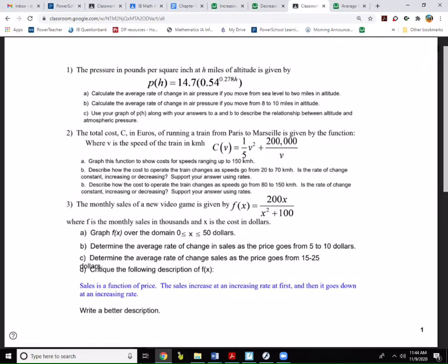In the first case, I have pounds per square inch of atmospheric pressure, and it's a function of your miles and altitude. So as you increase your miles of altitude, it's going to decrease the amount of atmospheric pressure because of the thinner density of the atmosphere. So I was asked to calculate the average rate of change from zero to two miles, and then again from eight to ten miles, and then use that to get a good description of the relationship between altitude and atmospheric pressure.